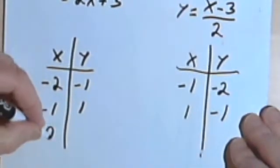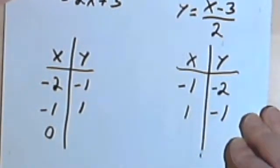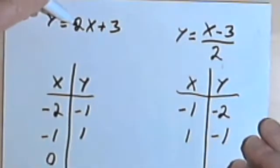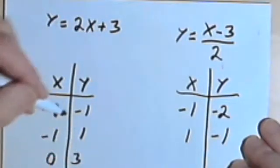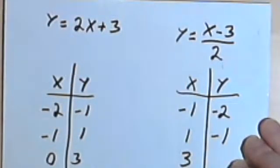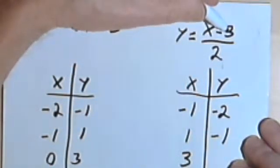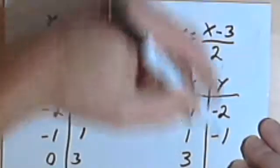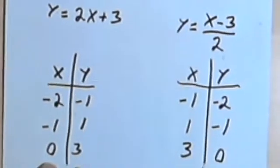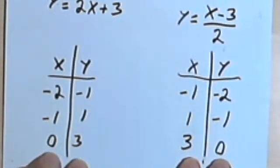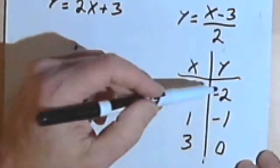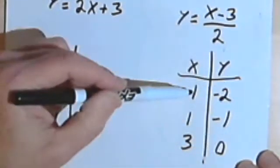Let's see what happens when x is 0. In the original function y equals 2x plus 3, when x is 0: 2 times 0 is 0, plus 3 is 3. When x is 3 in the inverse function: 3 minus 3 is 0, and 0 divided by 2 is 0. So once again, all I've done is swap the original ordered pair (0, 3) into (3, 0) — taking the x's and making them y's, and taking the y's and making them x's.